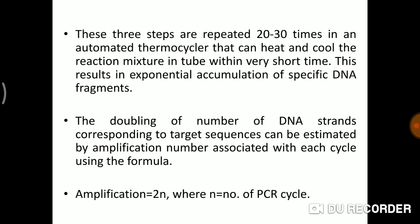In each cycle, there is a doubling of the number of DNA copies corresponding to the target — the desired segment. This can be estimated by amplification number associated with each cycle using the formula 2^n, where n is equal to the number of PCR cycles. For example, if n equals 2 (two PCR cycles), that is 2 multiplied by 2, which equals 4 segments. Likewise, for more cycles, we get more segments.